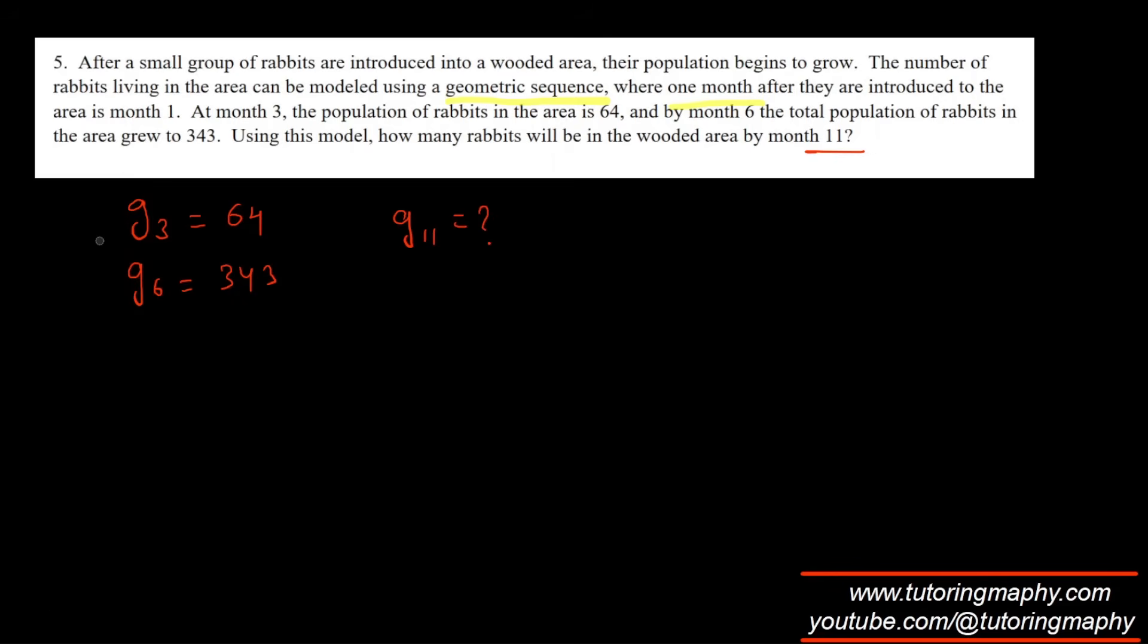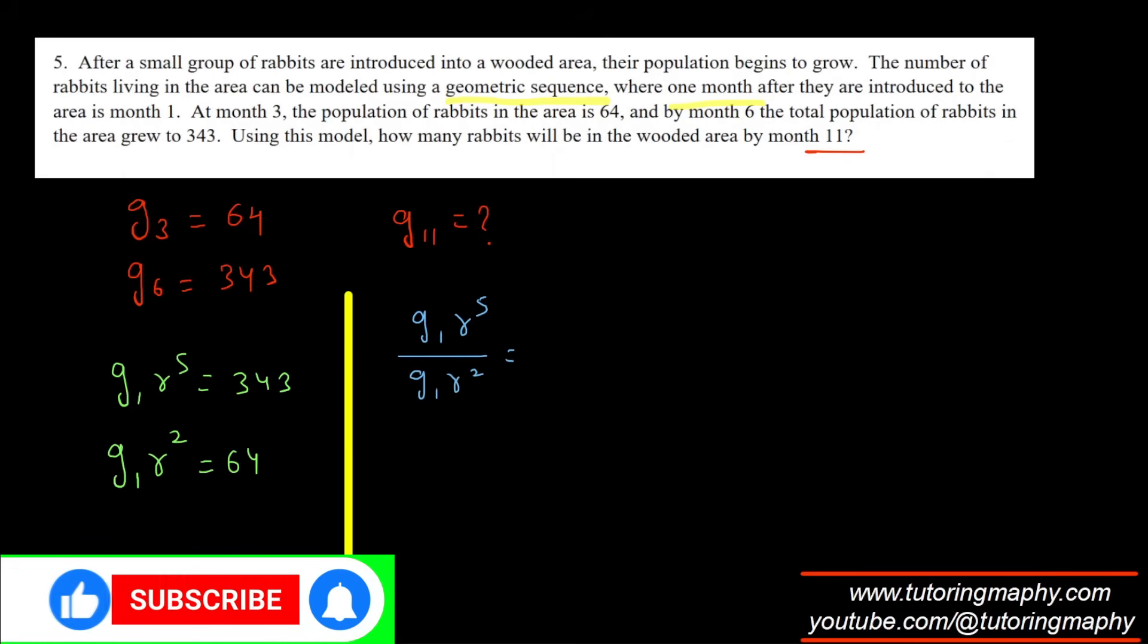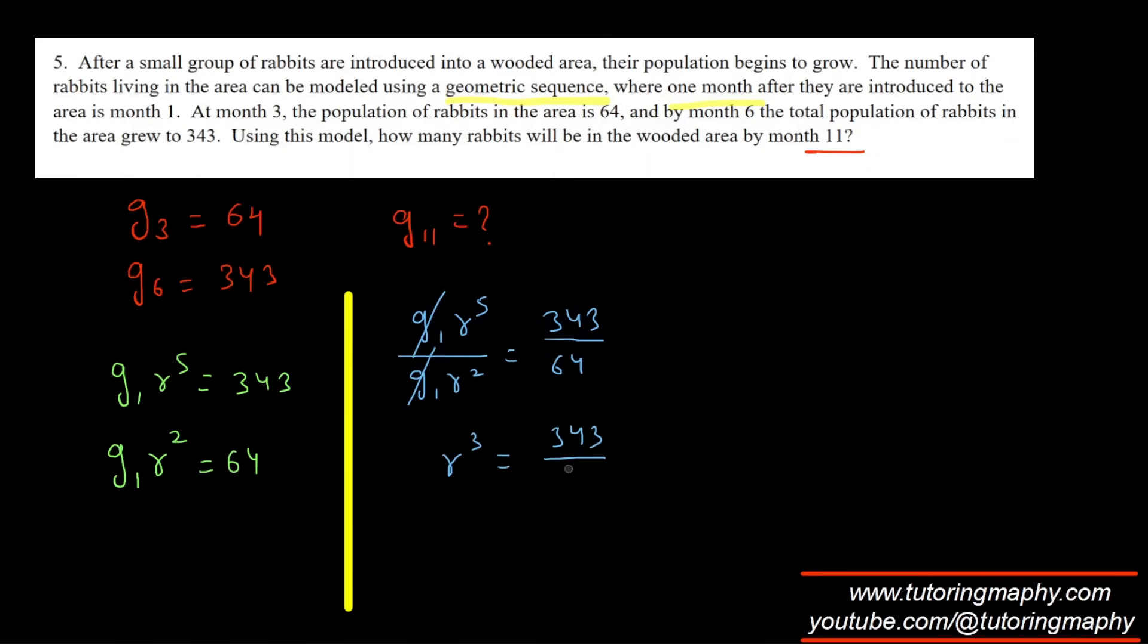Using the formulas, I know that g3 can be written as g1 times r squared, which equals 64, and g6 is g1 times r to the fifth, which equals 343. In geometric sequences, it's always a great idea to divide both of them. I prefer to take the r having a higher power on top, so g1 r to the fifth over g1 r squared equals 343 over 64. g1 cancels, r to the fifth over r squared is r cubed.